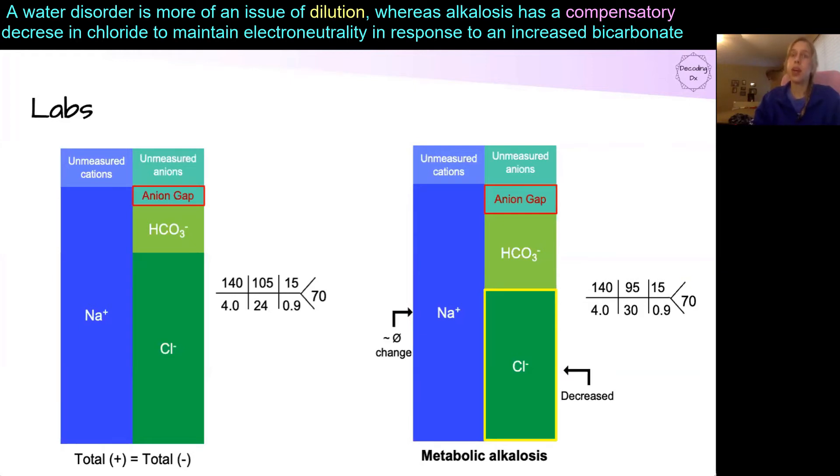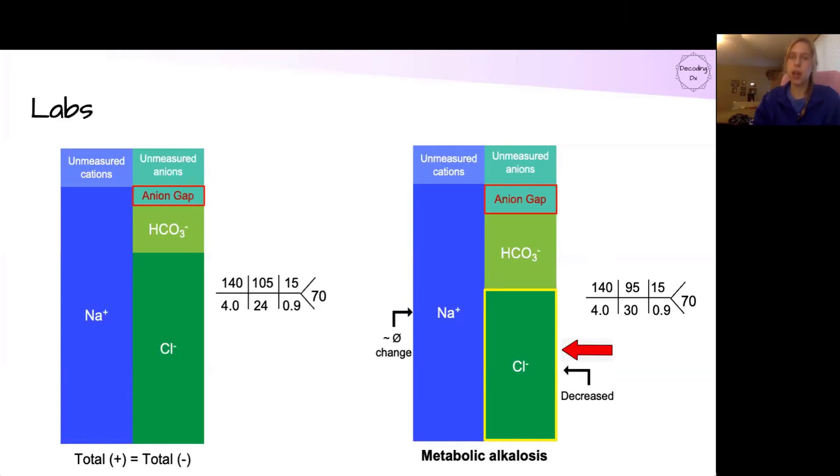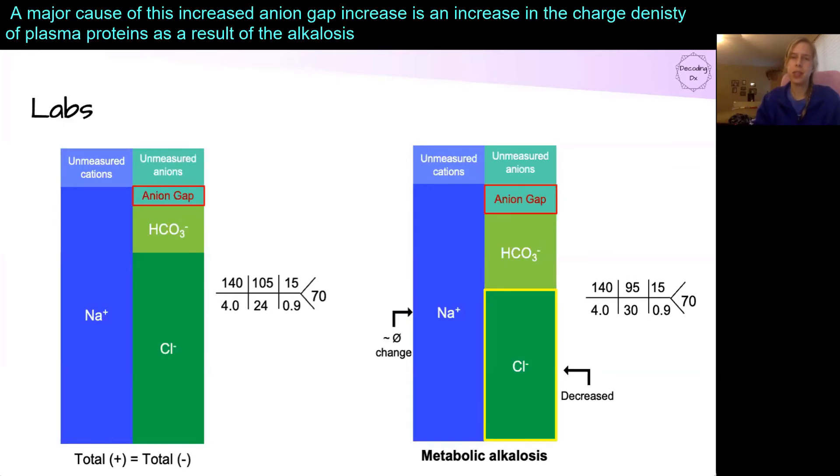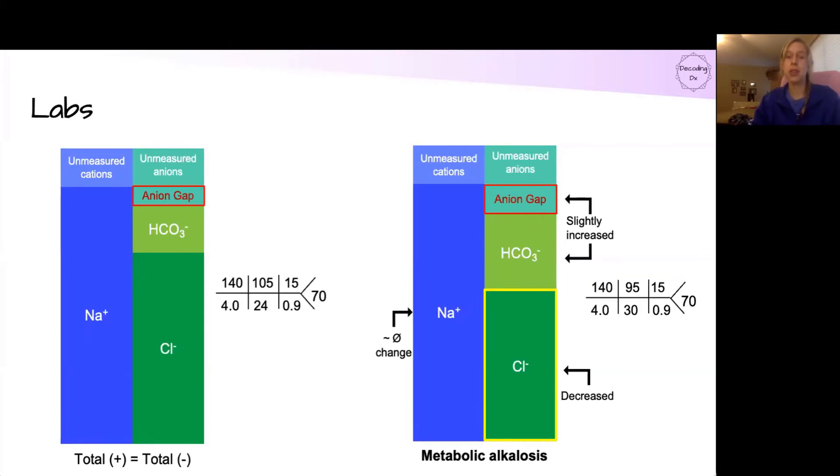So in general, alkalosis is going to have the higher bicarbonate, a lower chloride, and most alkalotic processes have a slightly increased anion gap for various different reasons relating to the different processes that create the alkalosis. But this also means that the relative decrease in chloride is going to be even greater to keep electroneutrality.